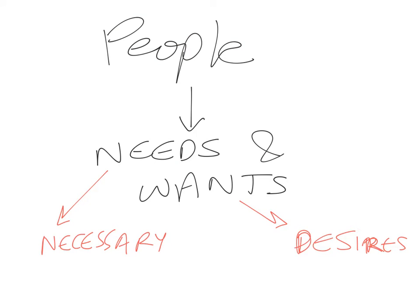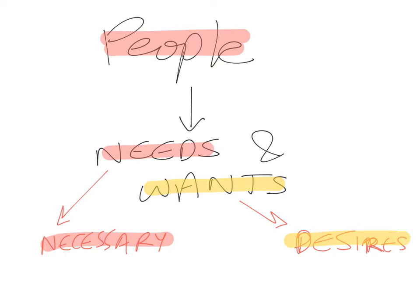Since all the social sciences study people and their behaviour in societies, people have needs — things that are necessary for their survival — and wants — things that they desire. Needs are things that are necessary for survival, like food, clothing, and shelter. Wants are things that we desire, like buying the new iPhone 6 or a new car. These things are not necessary for our survival, but they are things that we desire.